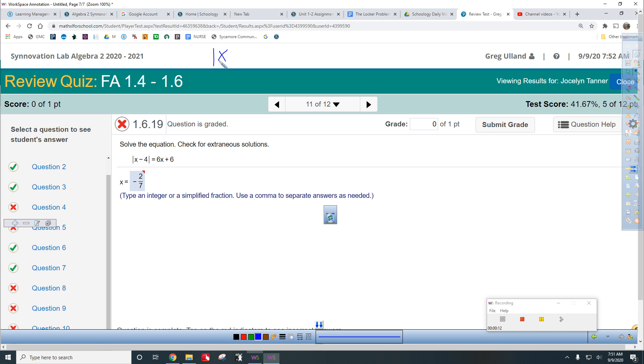Remember, if the absolute value of x is 3, well, that means x could be 3 or it could be negative 3. I hope that makes sense. So here, what you do is you say x minus 4 could be 6x plus 6. However, it could also, x minus 4 could also be negative 6x plus 6.